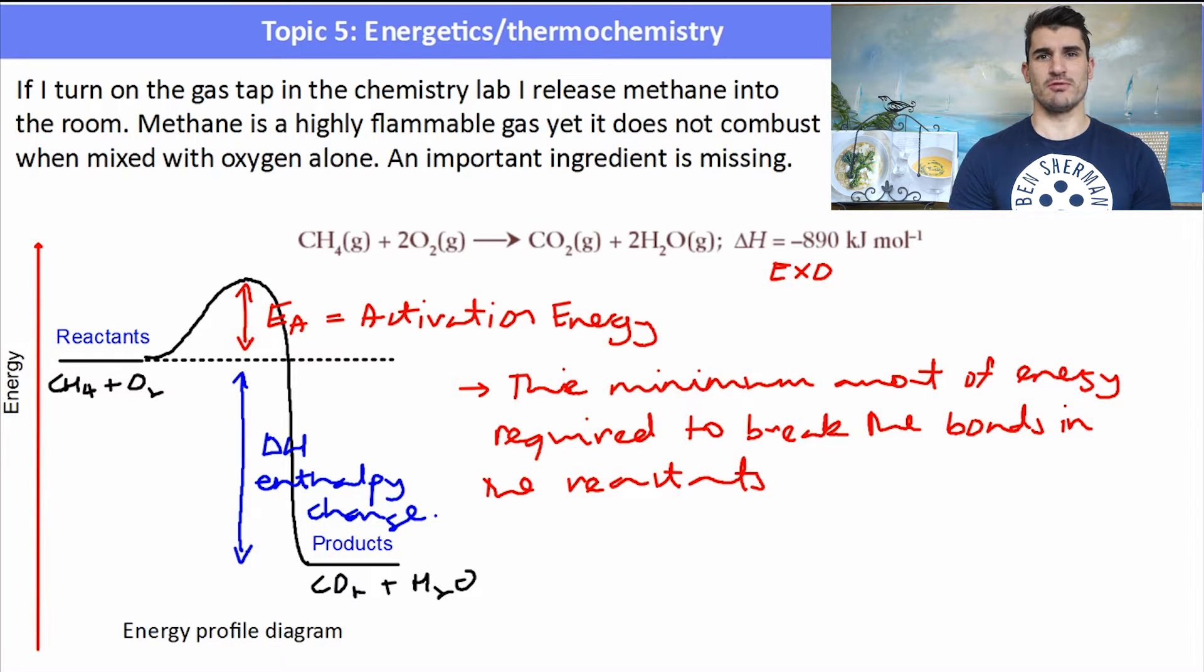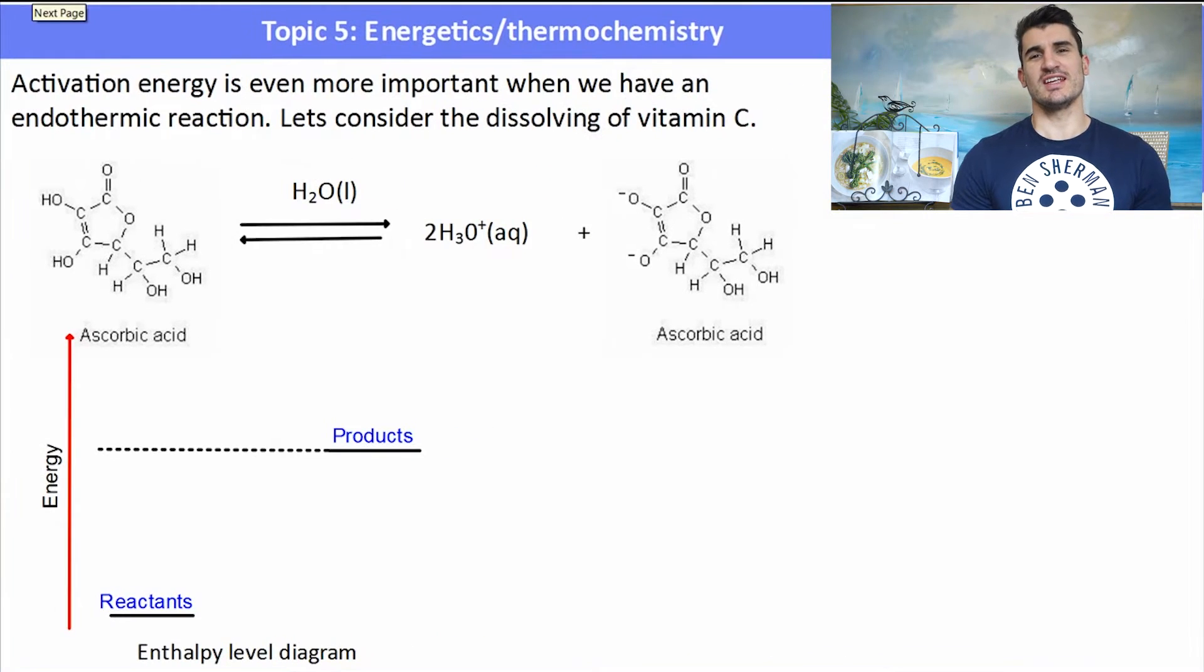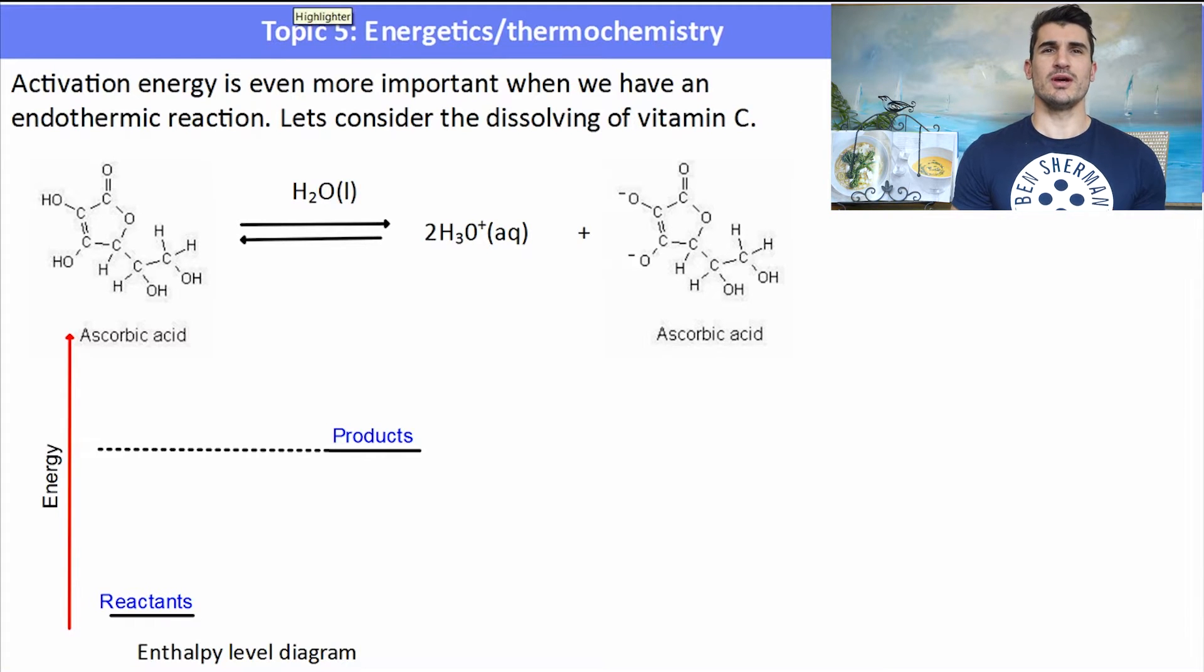If we have an endothermic reaction, the activation energy is even more important. So an example of an endothermic reaction is dissolving. Lots of things that dissolve are actually endothermic reactions. So our reactants have less energy than our products. So we get sort of the opposite of the curve from before, where we have a really big hump, and then a smaller delta H.